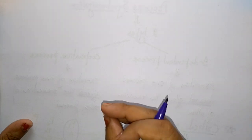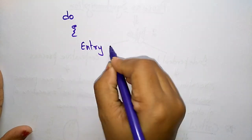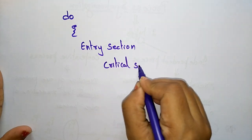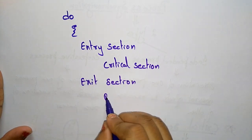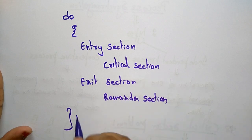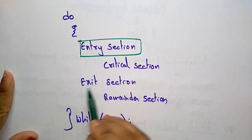A critical section is a code segment that can be accessed by only one process at a time; it contains shared variables which need to be synchronized to maintain consistency of data variables. The code structure consists of: entry section, critical section, exit section, and remainder section. The entry section executes when the condition is true.